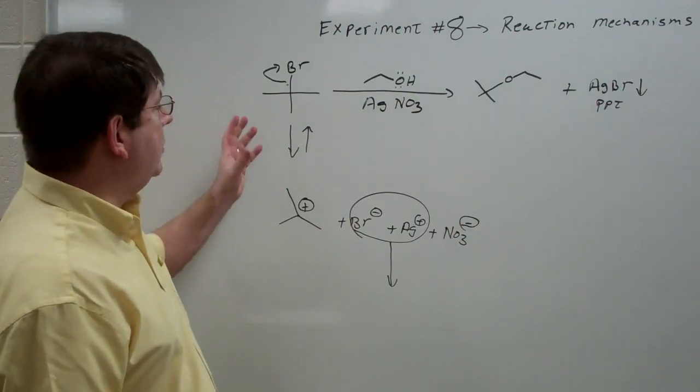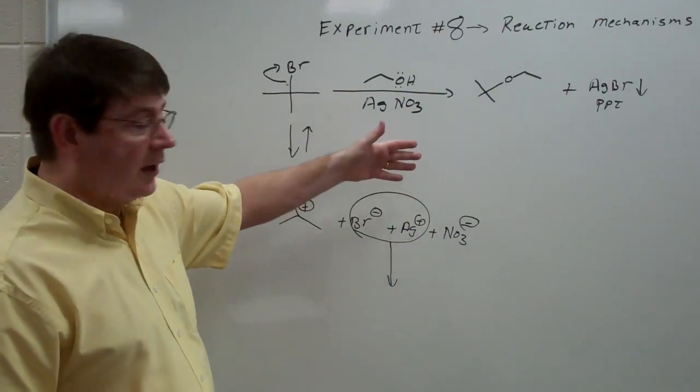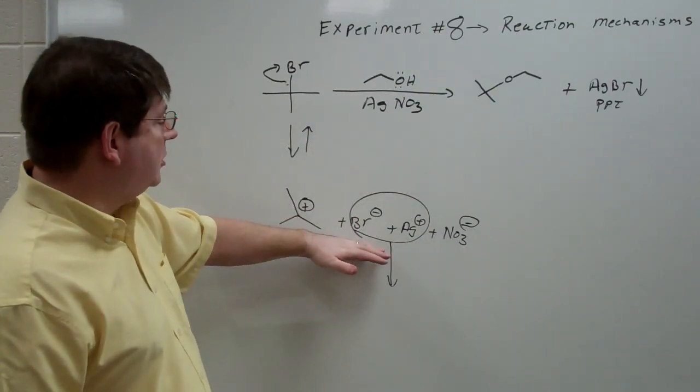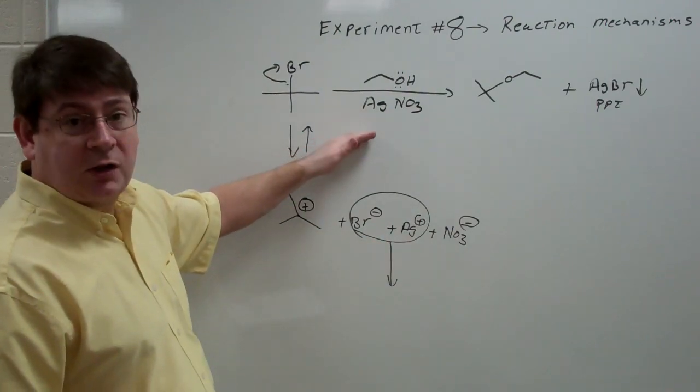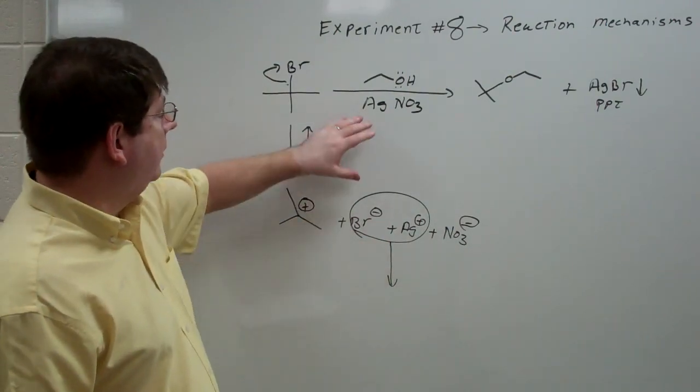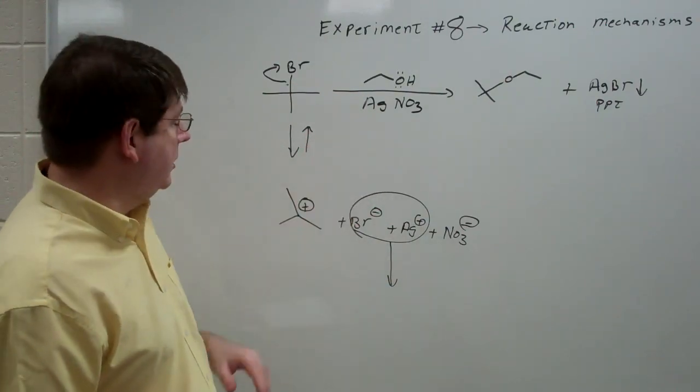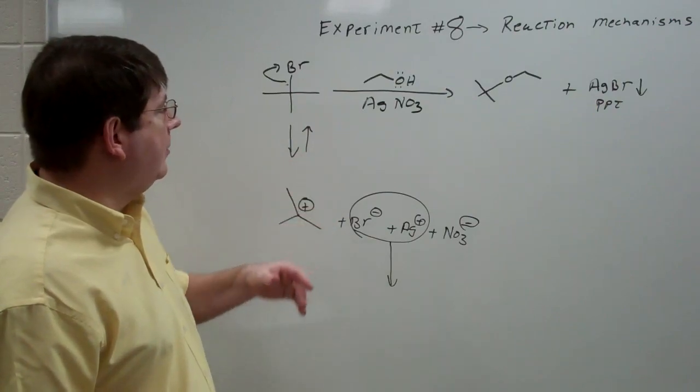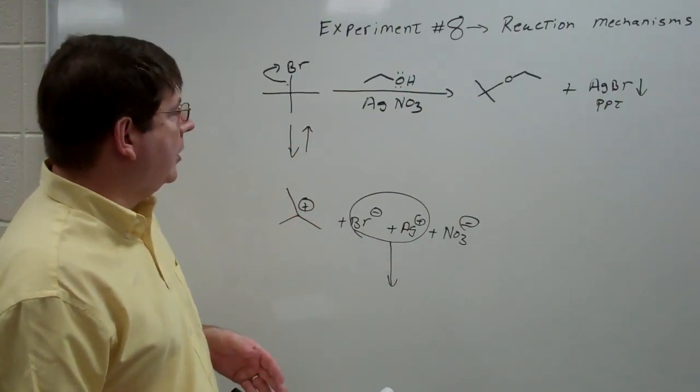And so again, if you see a white precipitate occur very, very quickly, you know that the reaction rate is very, very fast. If you have a very slow formation of the white precipitate, the reaction is very slow. And if you never see the appearance of the white precipitate, you know that there is no reaction. And so you monitor the time that it takes to see a precipitate to determine the order of reaction rates.